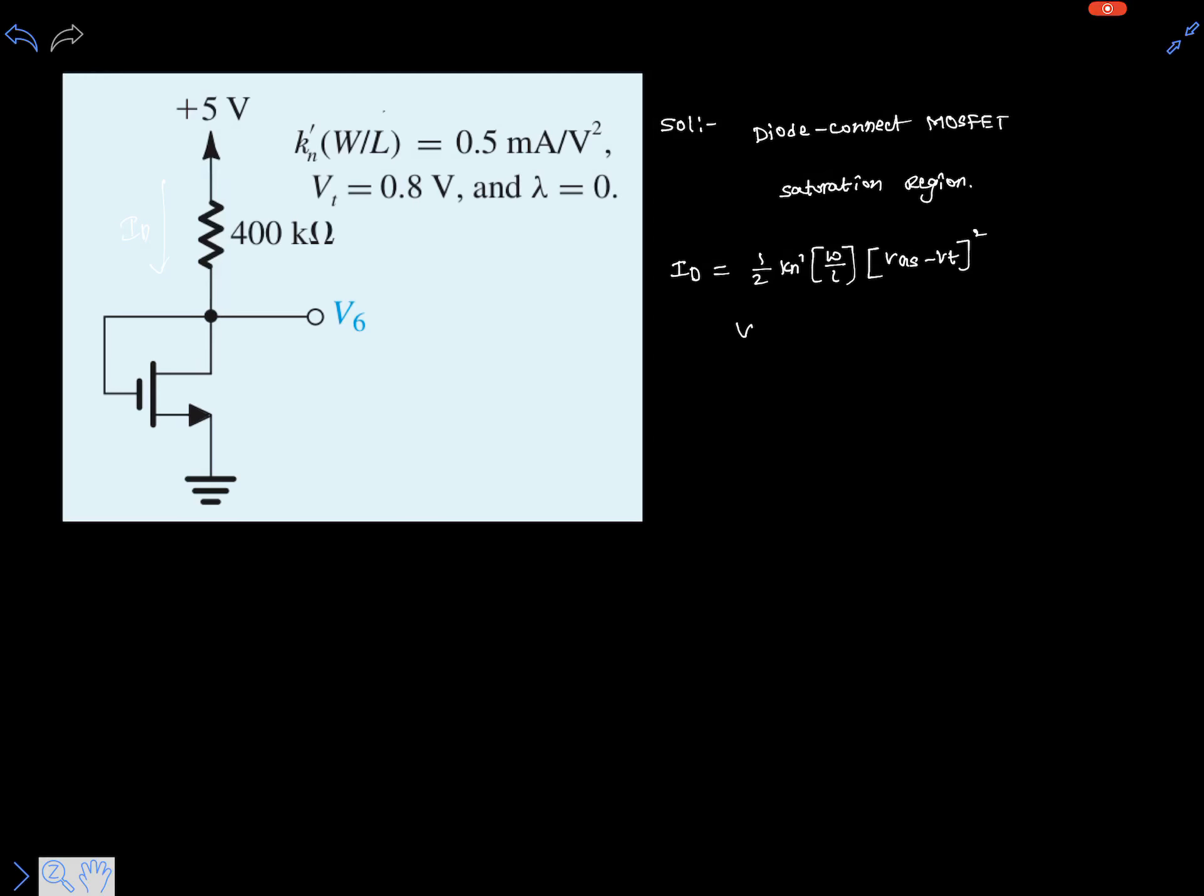Here VGS is clearly V6 only, because the gate and drain are connected together, so the gate voltage is simply V6. The source voltage is zero, so VGS is V6.